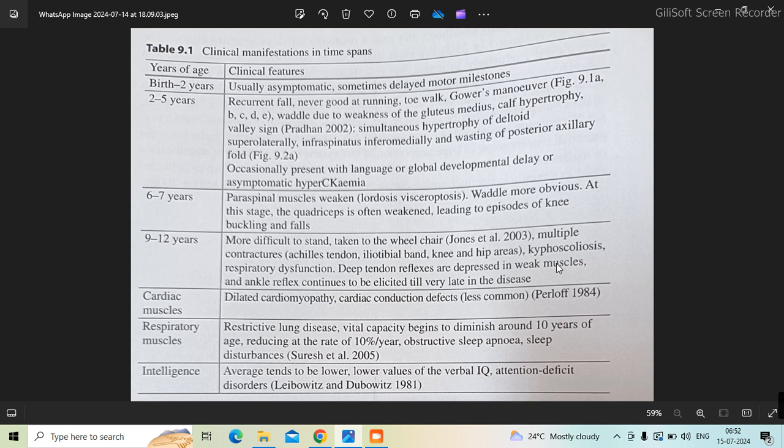Paraspinal muscles become involved, so there will be lordosis which becomes more obvious. The quadriceps start getting weakened, resulting in knee buckling and falls. From nine to twelve years, there will be more difficulty. The child will...